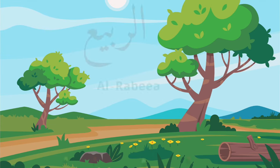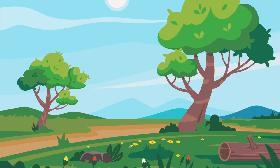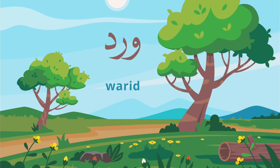Spring is الربيع. الربيع. في ورد كتير في الربيع — There's a lot of flowers in the spring. ورد means flower.